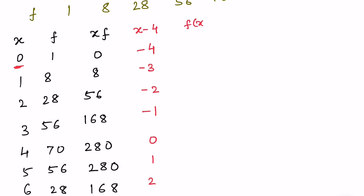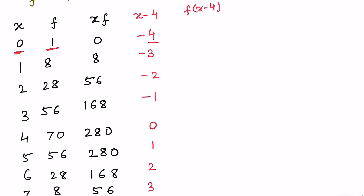Now finding f·(x−4): 1×(−4)=−4, then −24, −56, −56, 0 (anything multiplied by 0), and the positive terms repeat symmetrically: 56, 56, 24, 4. For the second moment we need f·(x−4)², so squaring (x−4) and multiplying by f gives: 16, 112, 56, 0, ...